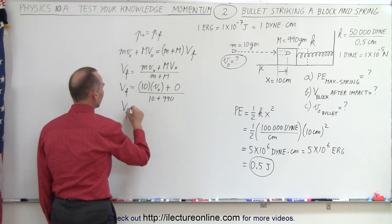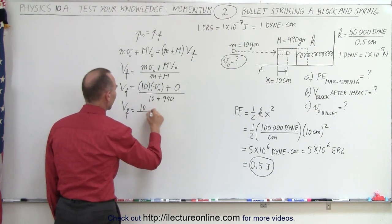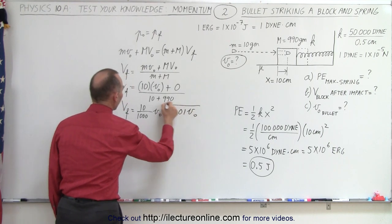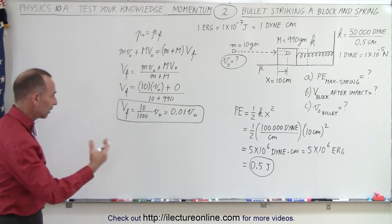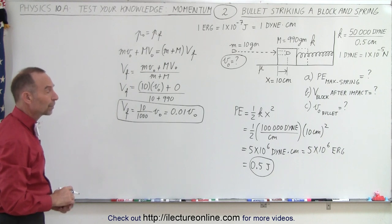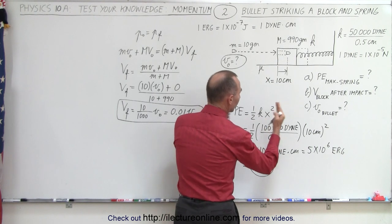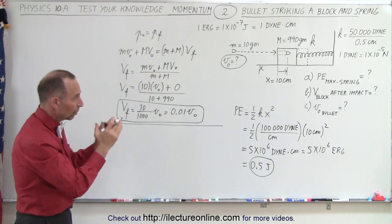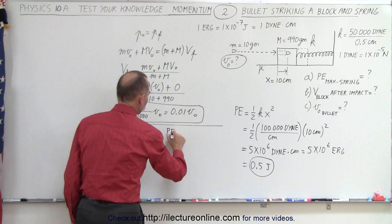Solving, v_final equals 10 divided by 1000 times v_initial, which is 0.01 times v_initial. So I cannot calculate v_final directly without knowing the initial velocity of the bullet. However, since we already calculated the maximum potential energy of the spring, there's another approach — we can use energy conservation, because right after the bullet strikes the block, the bullet and block together will have some kinetic energy.